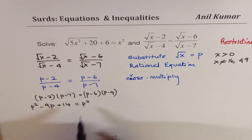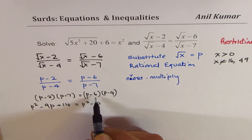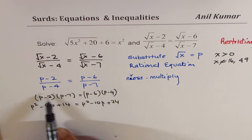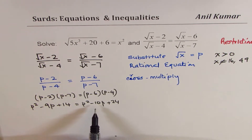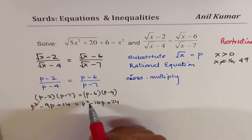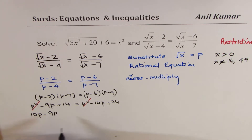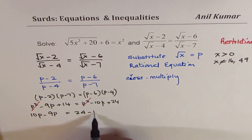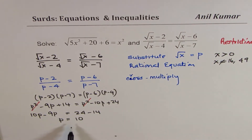On the right side, we get p² − 10p + 24. Bringing all terms to one side, p² and p² cancel, leaving 10p − 9p = 24 − 14, which simplifies to p = 10. So we get our solution p = 10.